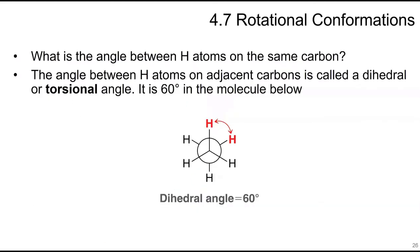The angle between hydrogen atoms on the same carbon is 109.5 degrees. The dihedral or torsional angle between a hydrogen on the front carbon and one on the back carbon is 60 degrees.